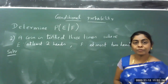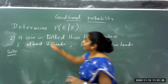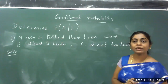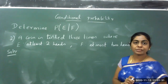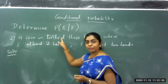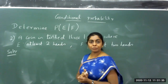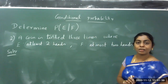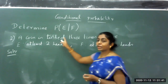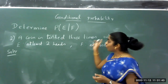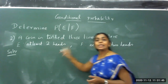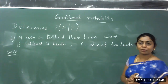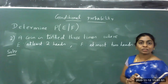The next problem, the second one: determine the conditional probability of event E when event F has occurred. Similar to the previous problem, the random experiment is a coin tossed 3 times, where E is at least 2 heads and F is at most 2 heads. Now let us try to work through this.